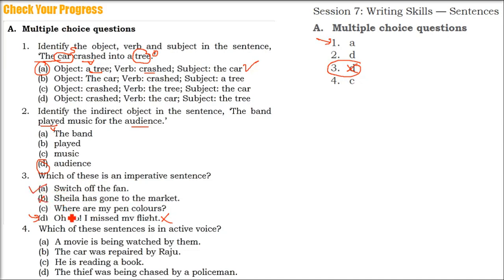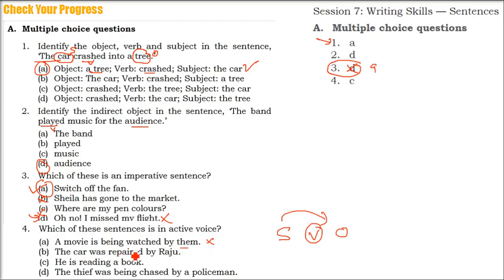Sheila has gone to the market — this is just a statement or declarative sentence. Where are my pen colors? — this is a question, an interrogative sentence. The correct answer is A; D is incorrect. Sometimes CBC and NCRT have wrong answers — I am just correcting them. Which of these sentences is in active voice? A movie is watched by them — passive. The car was repaired by Raju — passive, because the object is getting the action. He is reading a book — this is active voice; he is the subject working on book. C is the correct answer.